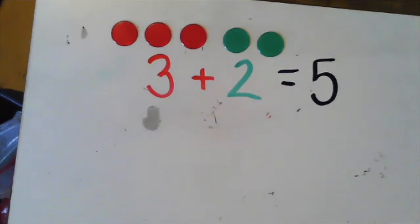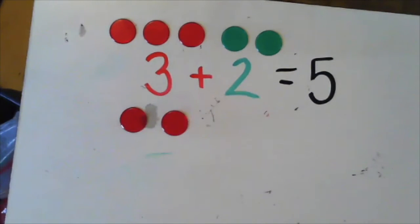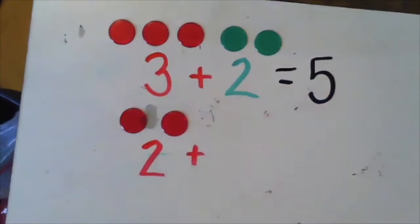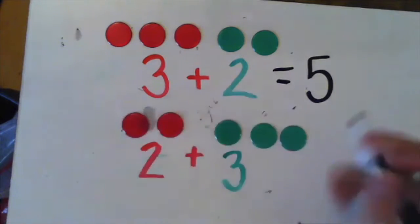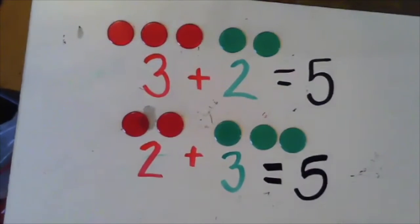Now let's look at something else. What if I have two red chips, one, two, plus three green chips, one, two, three? How many chips do I have in all? Did you say five? One, two, three, four, five. That's right, I have five chips in all.